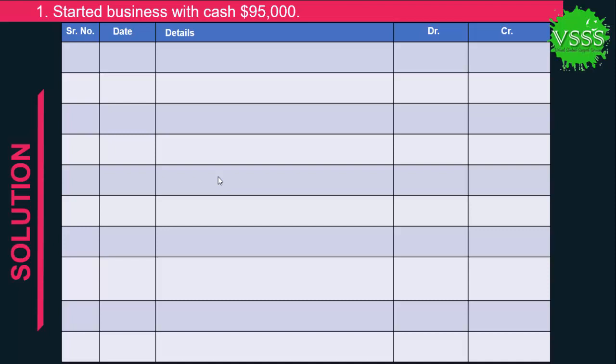Transaction 1: Started business with cash $95,000. Serial number 1, date is the 1st. This is a simple entry affecting two accounts: cash account and capital account. Cash account is debited by $95,000 because cash is an asset and when an asset increases it is debited. Capital account belongs to owner's equity (liabilities portion) and when it increases it is credited by $95,000.